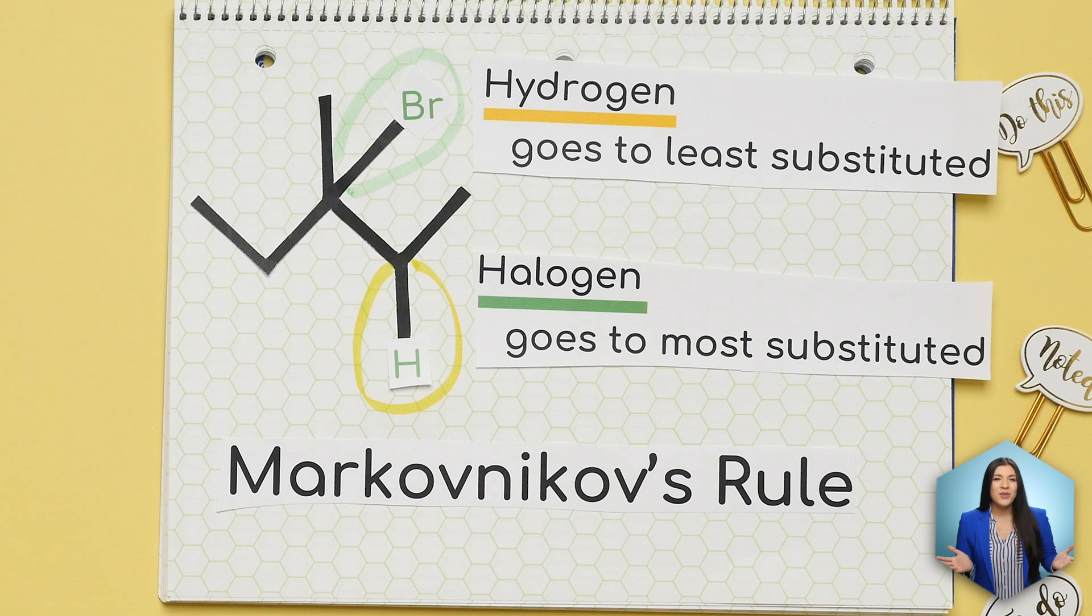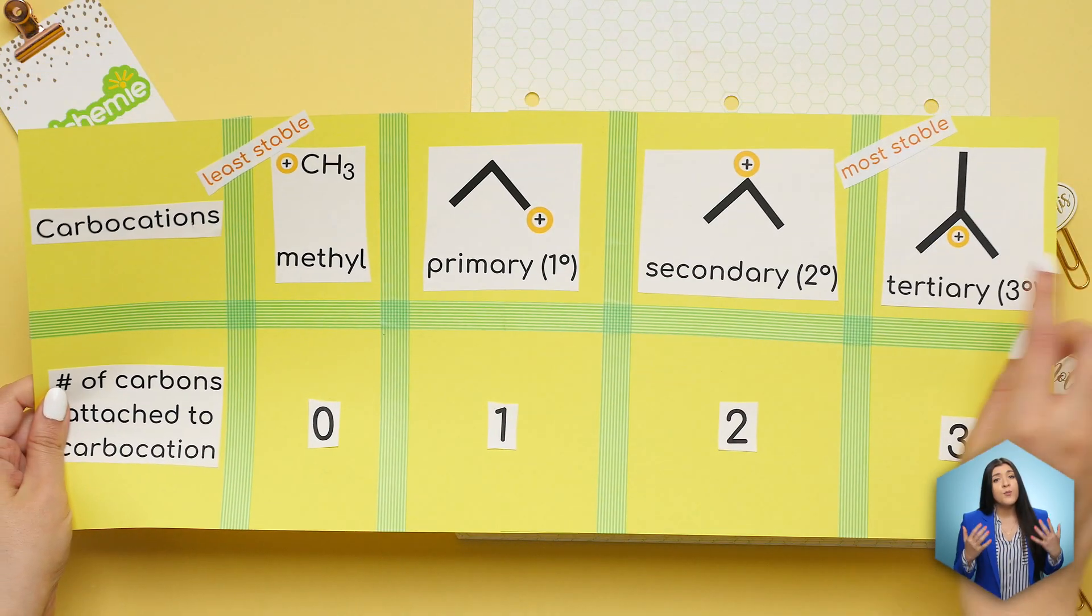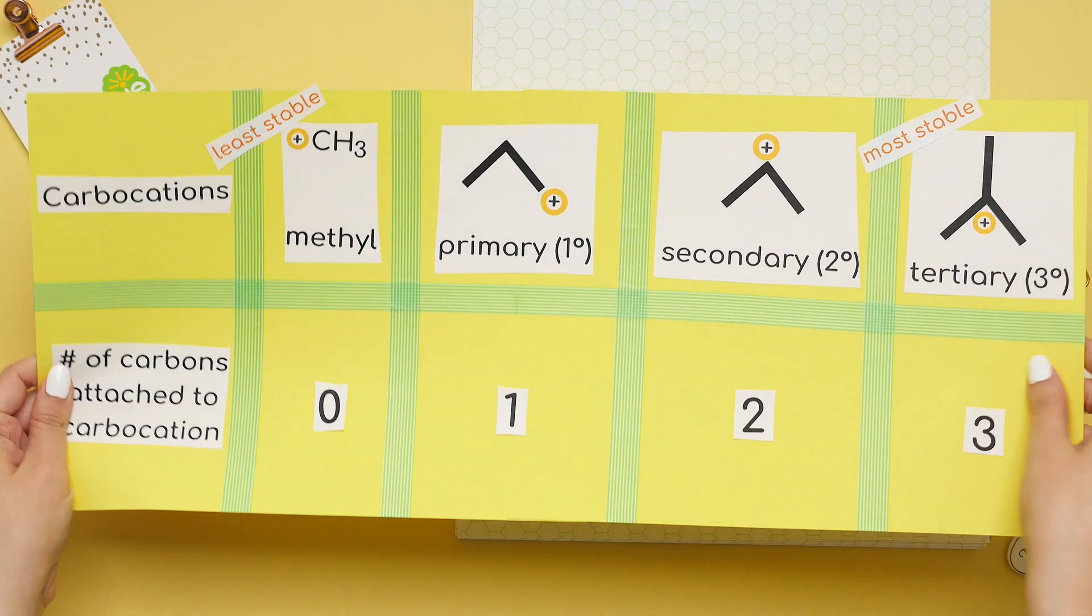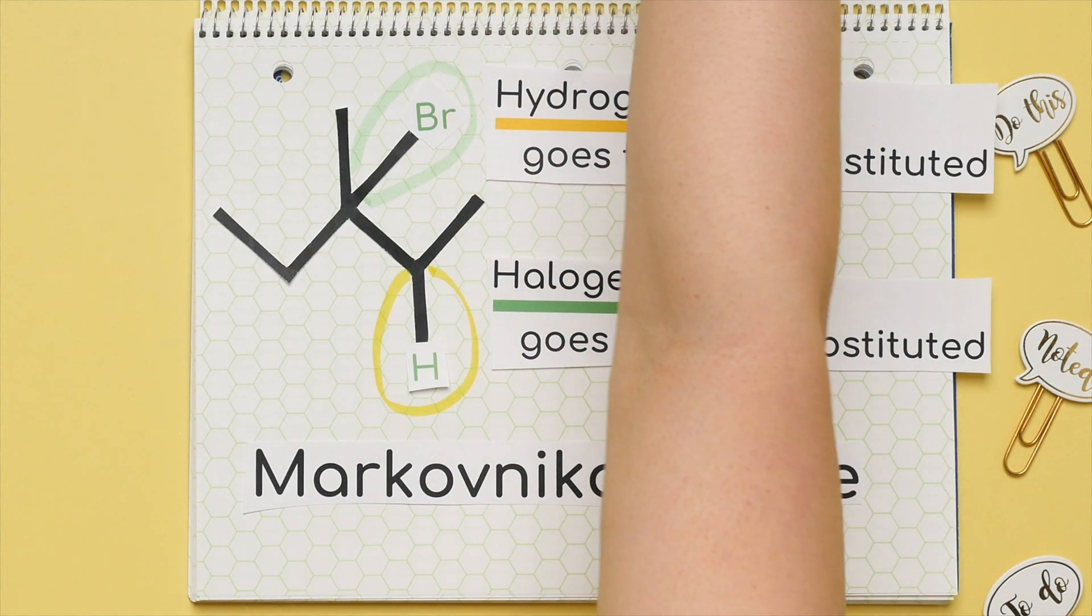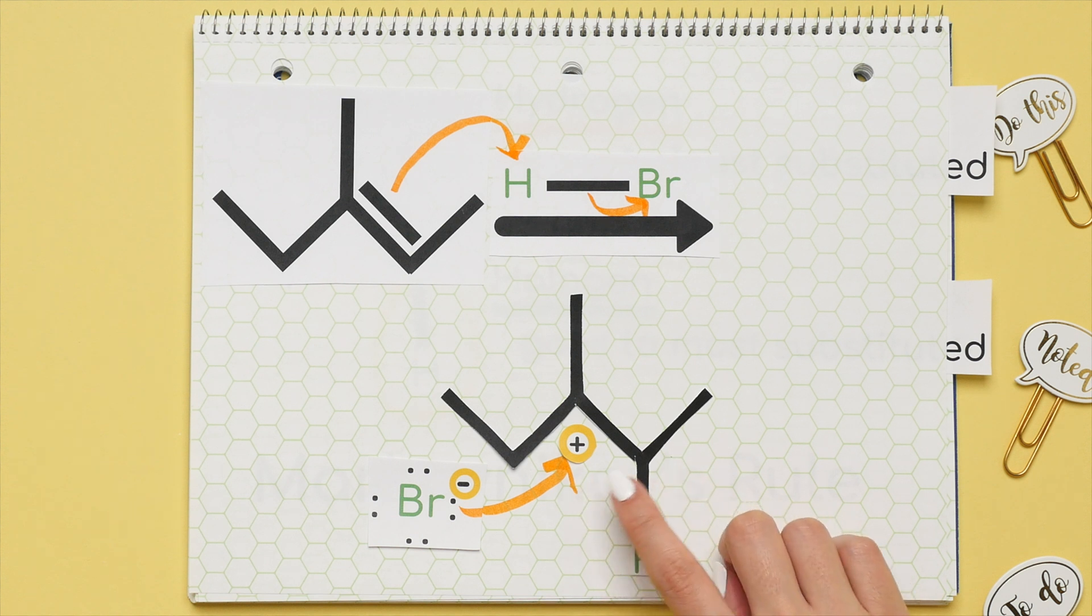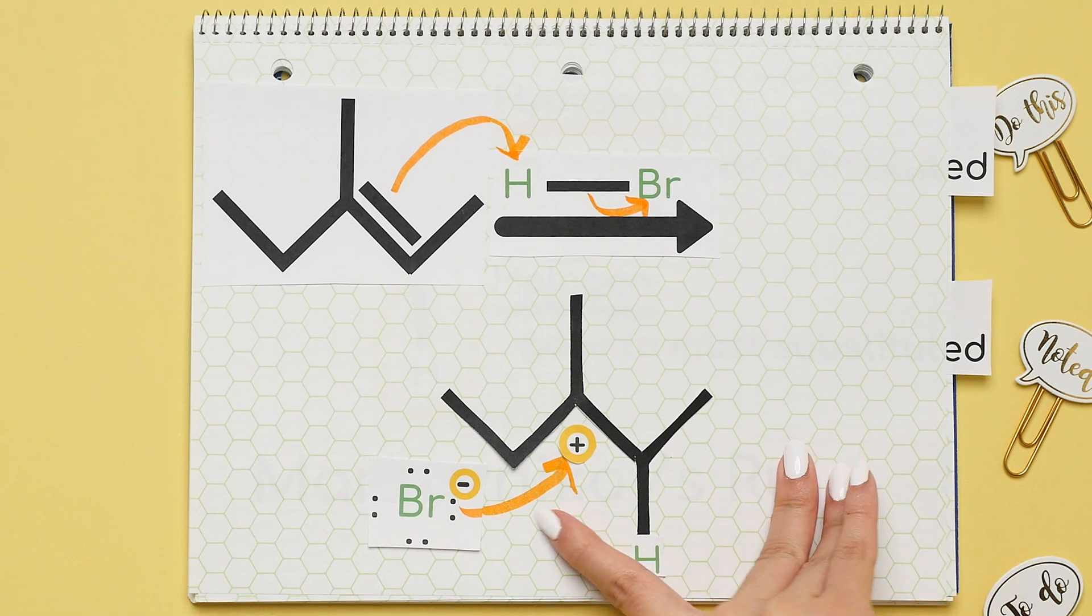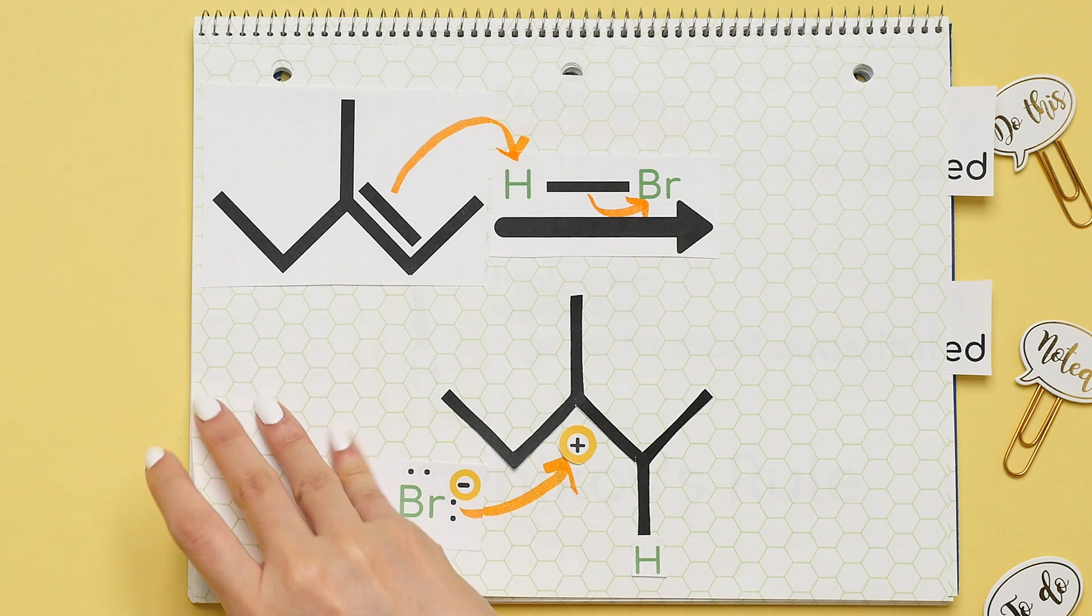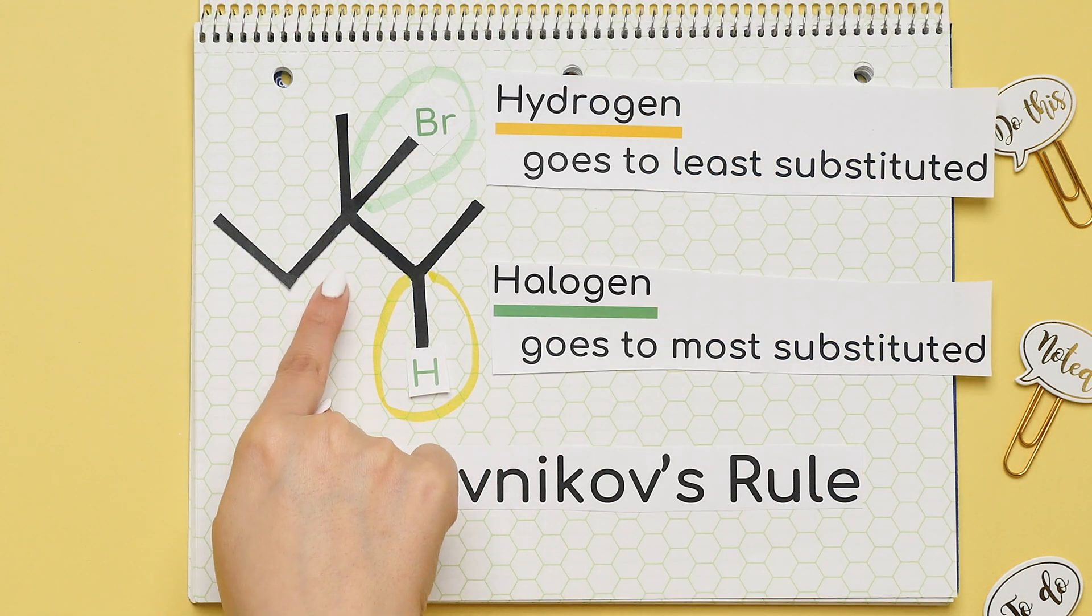Another way to remember this is we always want the most stable carbocation. So first make sure to get the most stable carbocation. So a tertiary carbocation if possible. Then do a nucleophilic attack to form our product which in this case was a tertiary alkyl bromide.